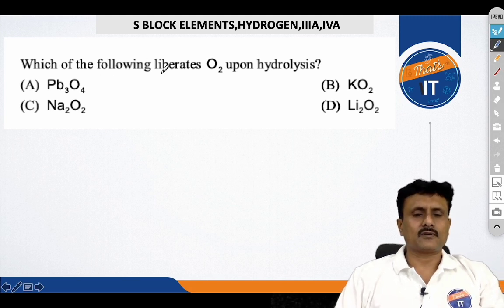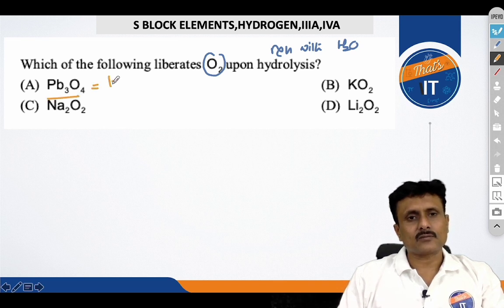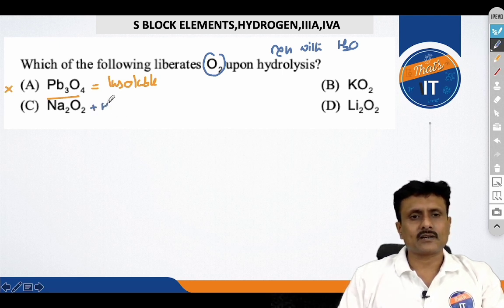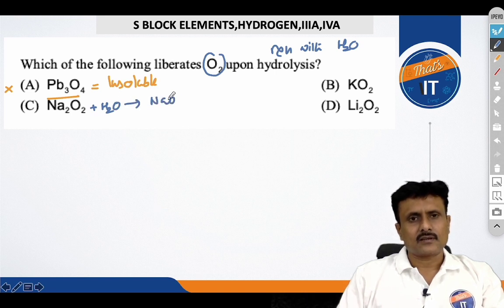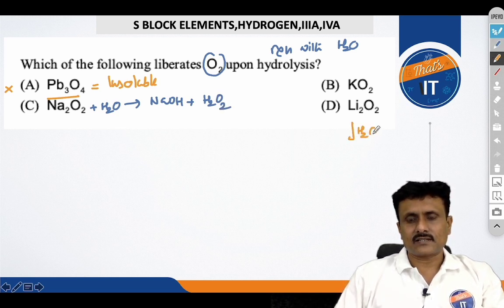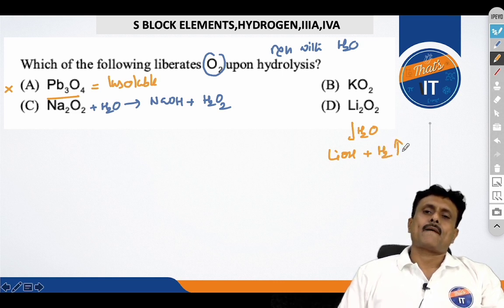Now, let's see the next question. You can see here that which of the following liberates oxygen gas upon hydrolysis, that is, reaction with water. You know that this Pb3O4 is insoluble in water. So, there is no point that this will react. Now, we know that Na2O2, when undergo hydrolysis, gives rise to NaOH and H2O2. And you know that lithium oxide gives rise to lithium hydroxide and H2 gas.